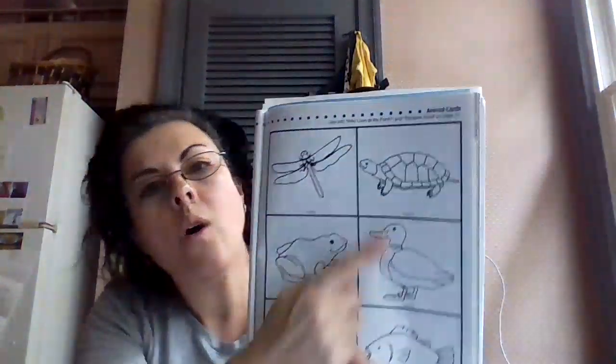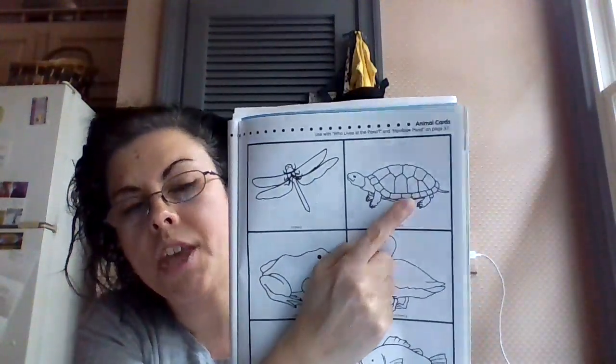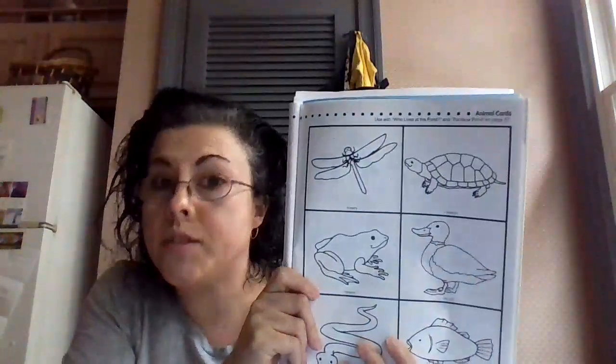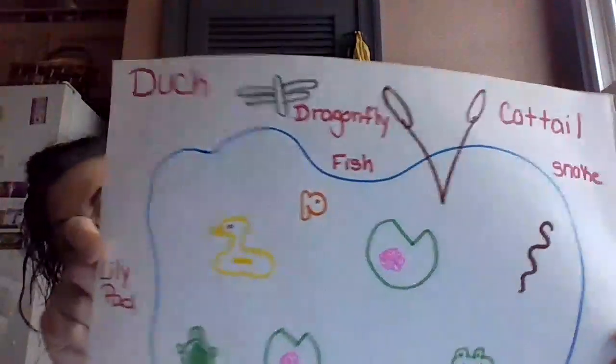How about this — what animal is this? That's right, that's the turtle. Does the turtle live at the pond? Yes, it does. The turtle lives at the pond. And a turtle carries its house on its back — the hard shell on top of the turtle is its house. Isn't that cool? I think that's really cool.